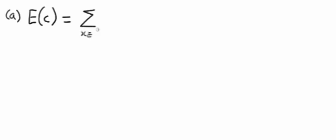you sum the quantity over the support of the random variable x, the function C, which in this case is a constant, times the probability mass function f.